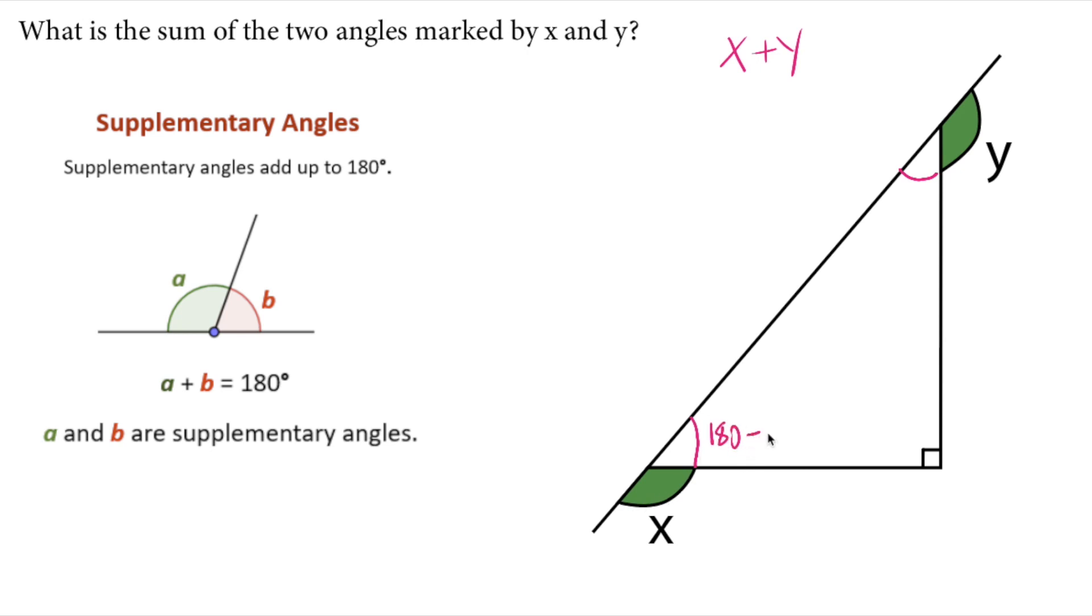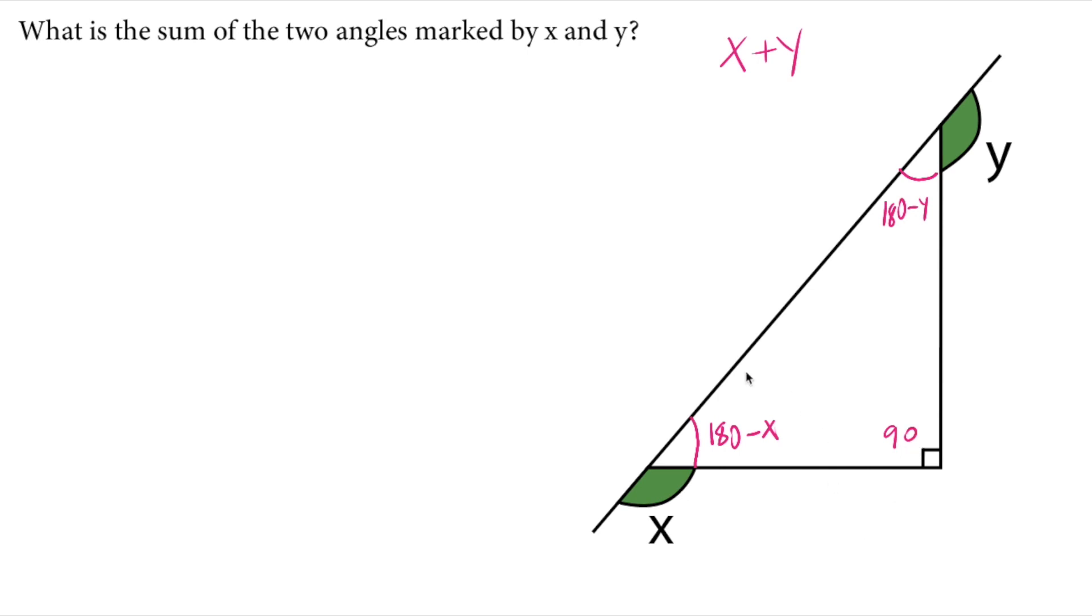So therefore, this angle will be 180 minus X, and this will be 180 minus Y. This is 90 degrees.